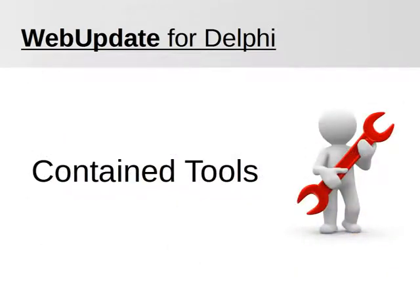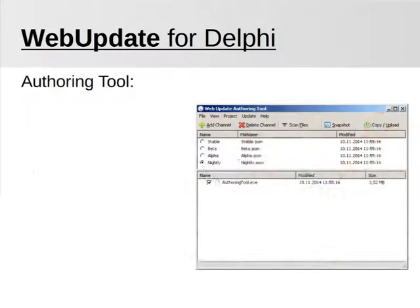Let's have a closer look at the tools which are shipped. All tools come with full source code. We start by looking at the authoring tool, which is responsible for creating the initial snapshots.